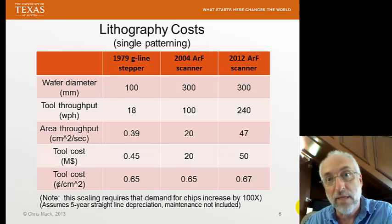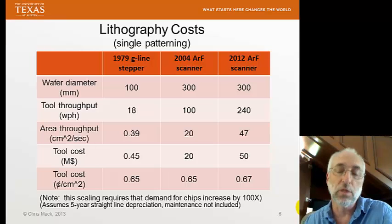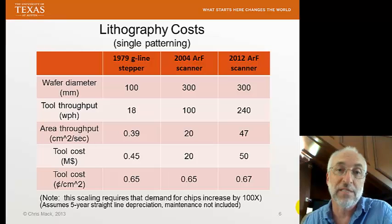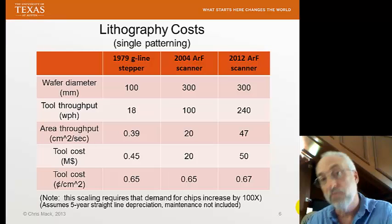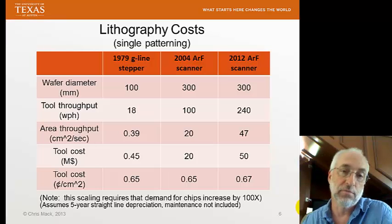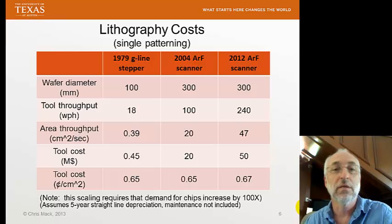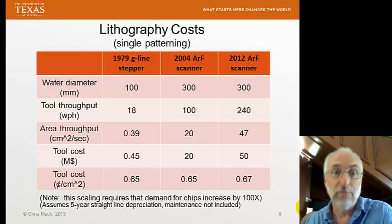The other way — maybe the most important way — that we've been able to keep costs low as complexity goes up is by increasing the productivity of the manufacturing tools. We'll talk about deposition tools, etch tools, and lithography tools. Lithography is the printing technology — we buy cameras that print the patterns of our transistors on each wafer, and these cameras are very expensive. In 1979, you could buy one of these cameras called a stepper for about half a million dollars. By 2012, the state-of-the-art camera — now called a scanner — was 50 million dollars. The price went up by a factor of 100.